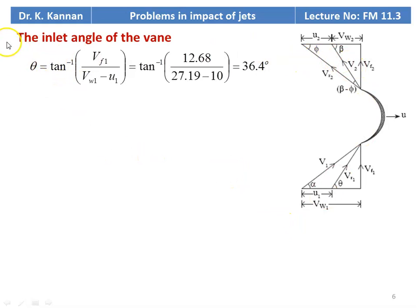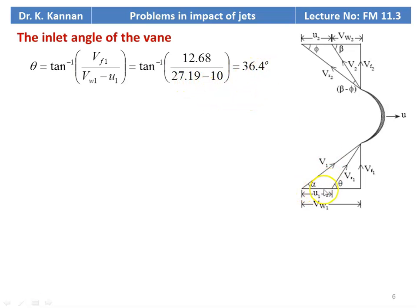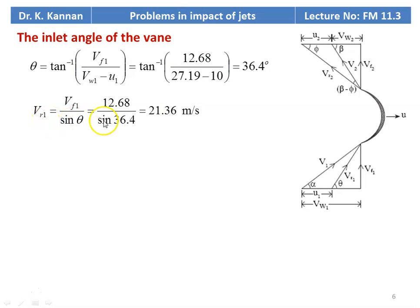From the inlet velocity triangle, the inlet angle of the vane theta = tan⁻¹(Vf1 / (Vw1 − U)) = tan⁻¹(12.68 / (27.19 − 10)) = 36.4°. Assuming frictionless flow (Vr1 = Vr2), we calculate Vr1 = Vf1 / sin(theta) = 12.68 / sin(36.4°) = 21.36 m/s.